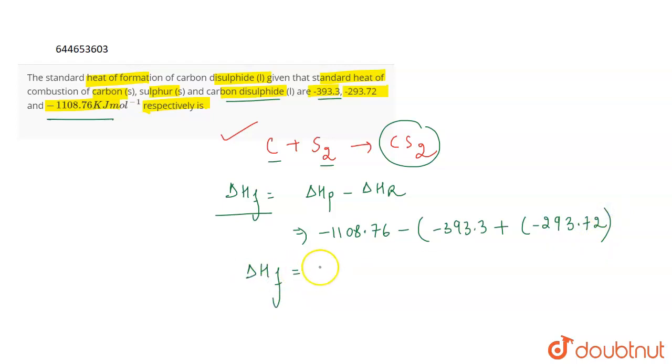So the delta H of formation becomes equal to 128.02 kilojoule per mole. This will be the correct answer for the question.